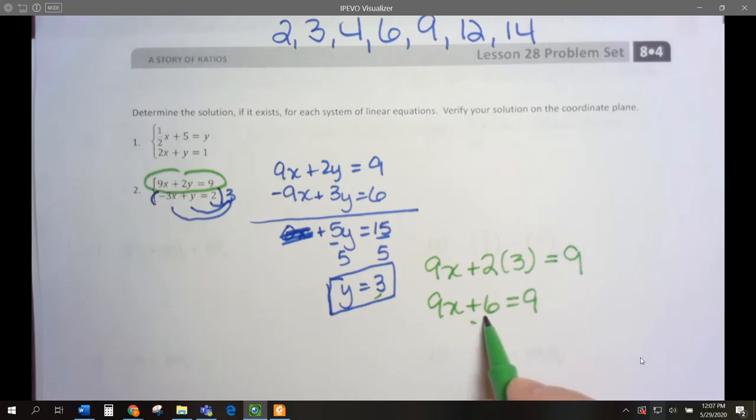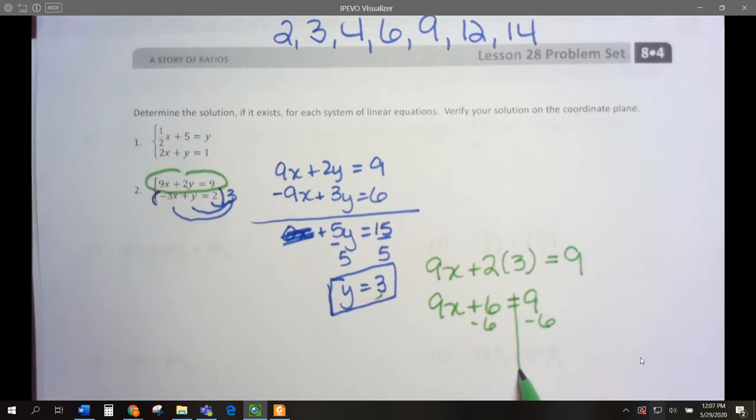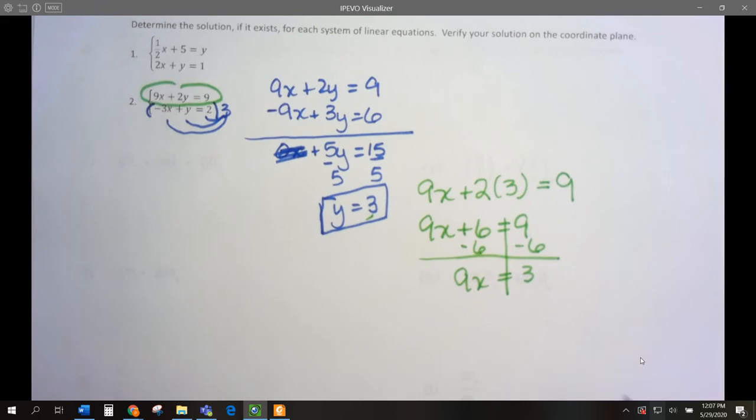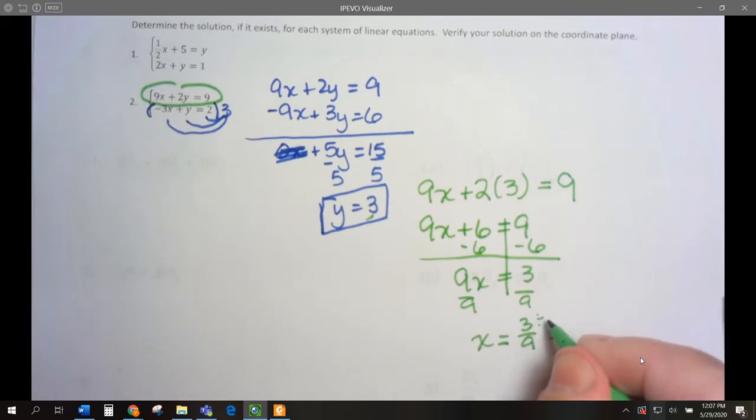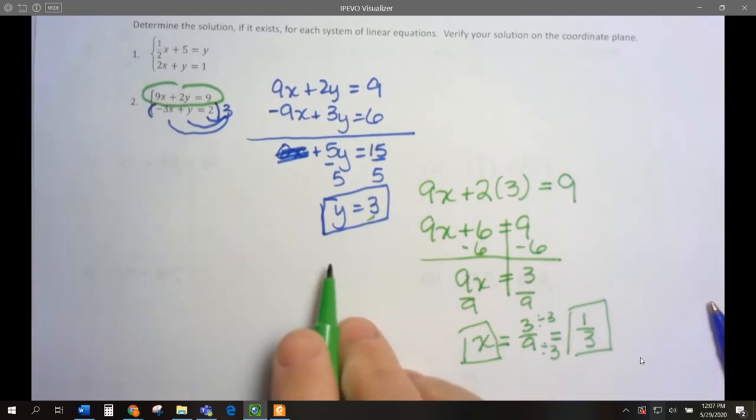I'm going to subtract 6 from both sides. We get 9x equals 3. Now we divide by 9, and x is going to be 3 over 9. We can reduce that by dividing the numerator and denominator by 3, and we get 1 third.